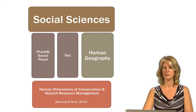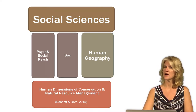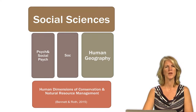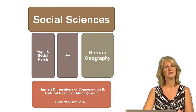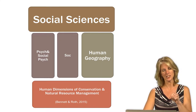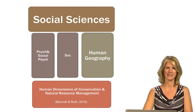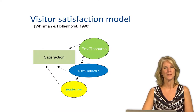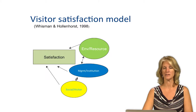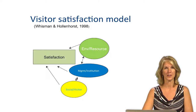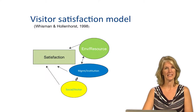Similarly, you've been exposed to different variables and understandings of how they relate to recreation behavior. Recreation and conservation behavioral research largely draws from and builds on these theories. Influenced by expectancy theory, this simple visitor satisfaction model reveals three categories that influence visitor satisfaction: the resource, the managing institution, and the visitor themselves in a social setting.